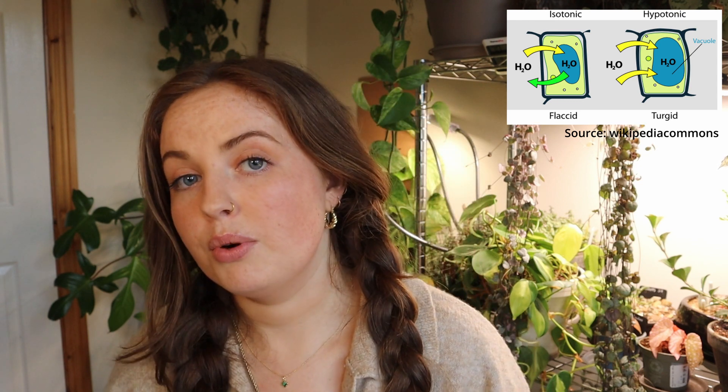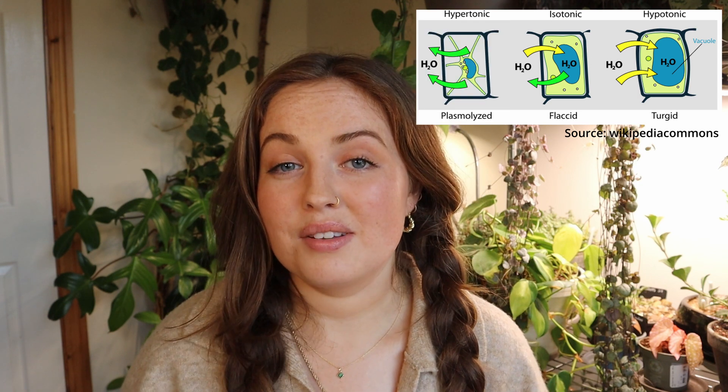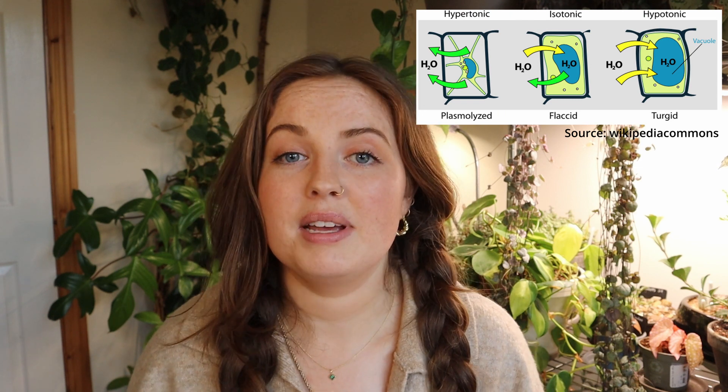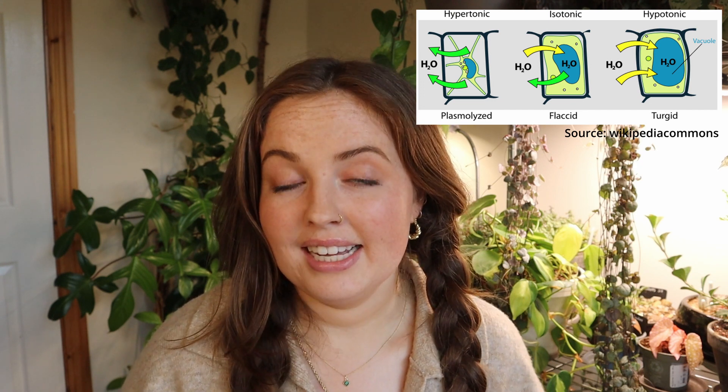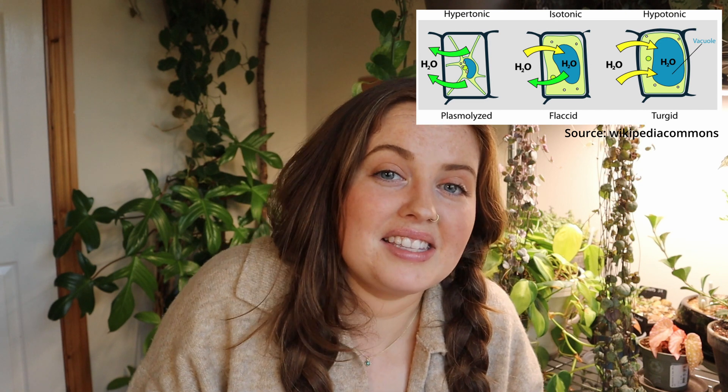Isotonic is a more neutral phase where there is no net loss or gain of water — water is moving in but also the same amount moving out. Then we have hypertonic or a plasmolyzed cell, which is basically the opposite of hypotonic — the cell has essentially shrunk itself, collapsing in on itself with no water inside and totally dry.